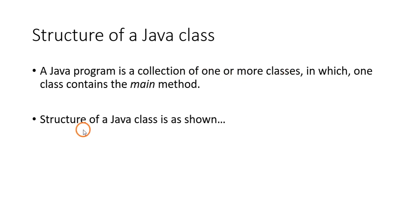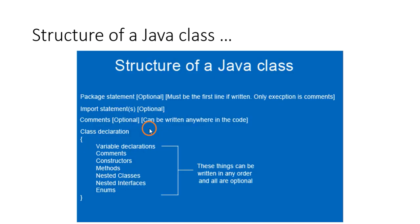Since a Java program contains one or more classes, let's see the structure of a Java class. It is as shown here — this is the structure of a Java class.